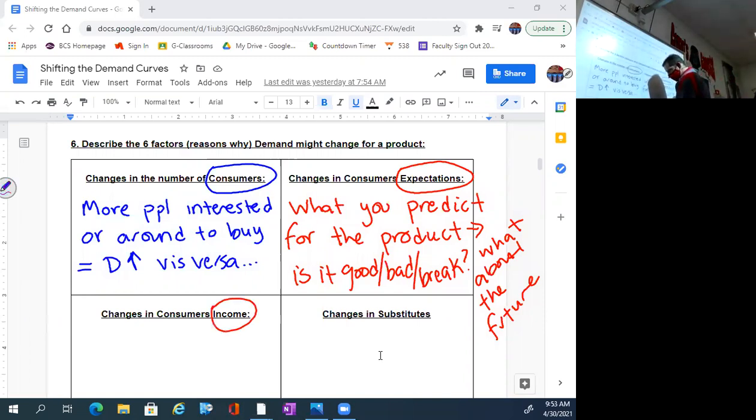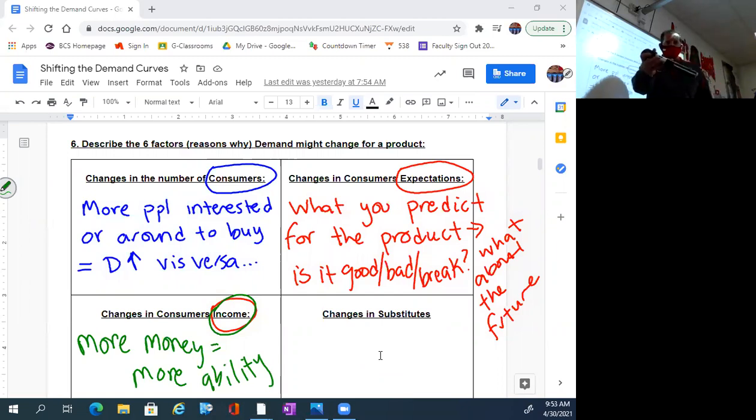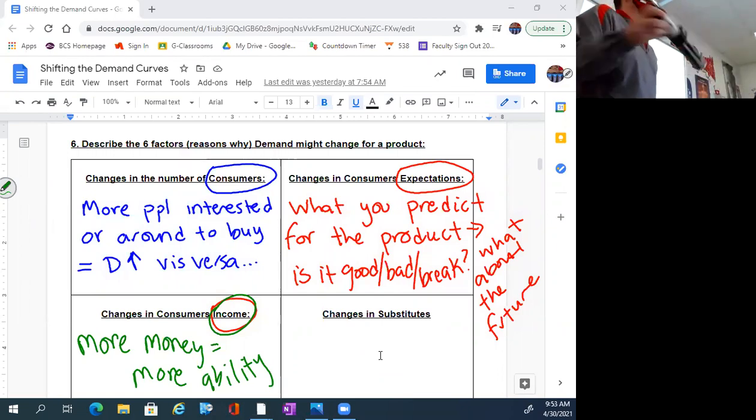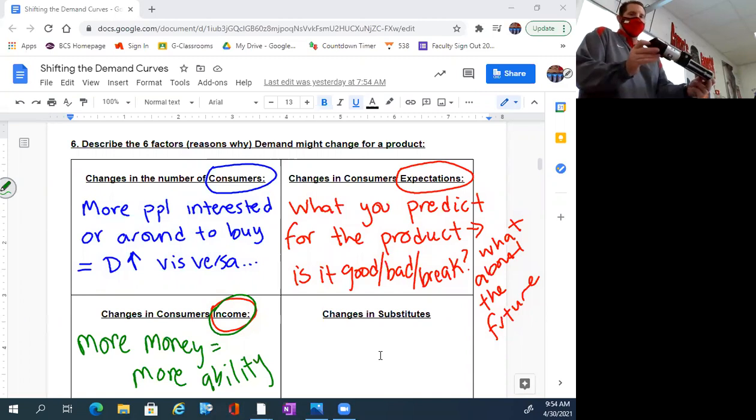Income. The next one, income. Consumer income. More money equals more ability. Obviously, right? If you get a raise at your job and then you go to Disney World, you're going to have more money in your pocket. If I gave my daughter $20 a month instead of $10 a month for allowance, she's going to have more money. She's going to have more ability to purchase this, right? So her demand would naturally go up. Vice versa. Maybe she did something really bad and I cut her allowance. Or you lose your job. Less money, less demand for products. Simple stuff, right?